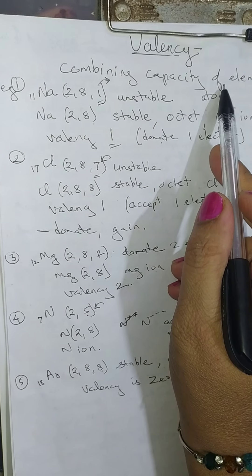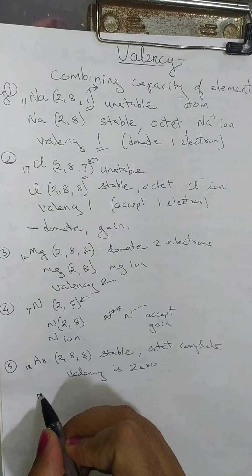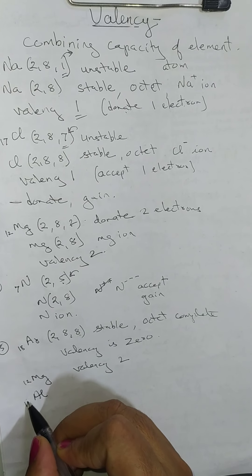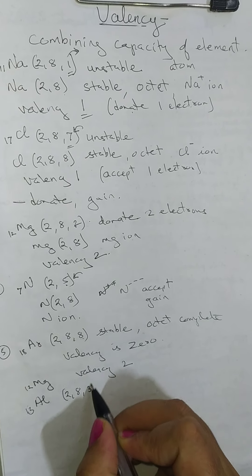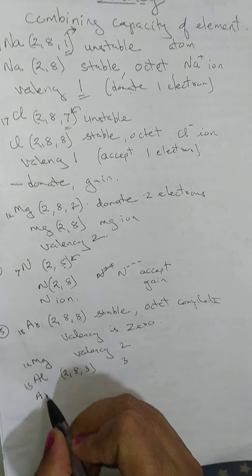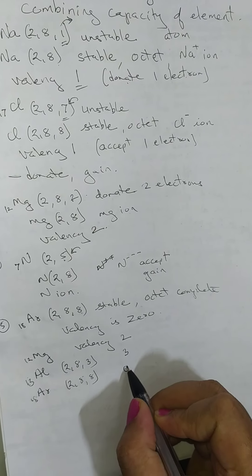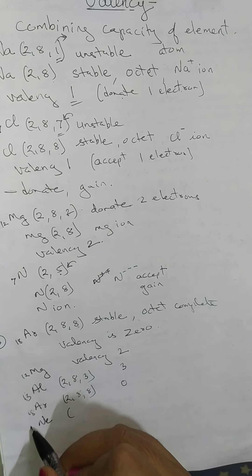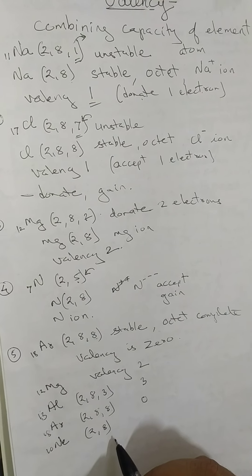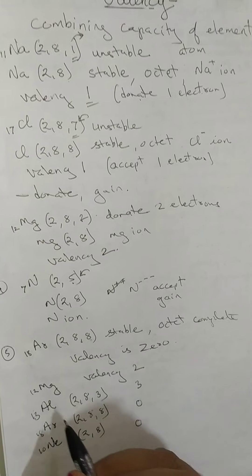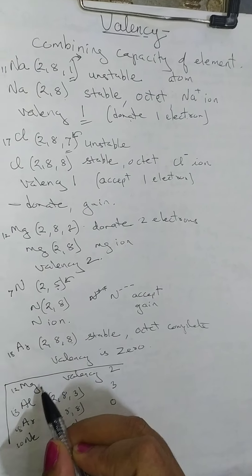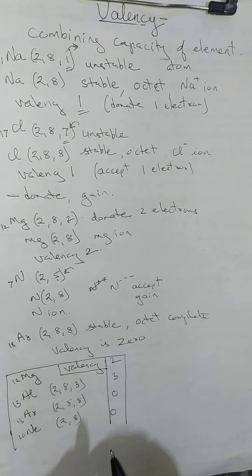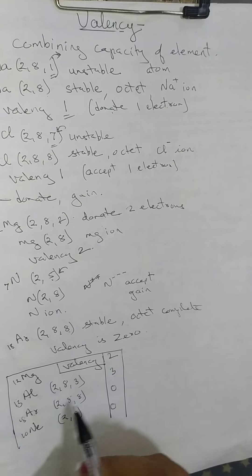Valency is the combining capacity of elements. To summarize some examples: magnesium (12) has valency 2; aluminium (13) with configuration 2, 8, 3 has valency 3; argon (18) with configuration 2, 8, 8 has valency 0 because it neither gains nor accepts electrons; neon (10) with configuration 2, 8 is stable, so its valency is also 0.